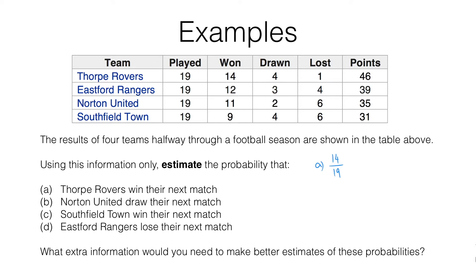In question B, we're asked for an estimate of the probability that Norton United draw their next match. Norton United have drawn two out of their 19 matches, so the best estimate is 2/19. In question C, the probability that Southfield Town win their next match is 9/19, as they've won nine out of 19. In part D, Eastford Rangers have lost four out of their previous 19 matches, so we estimate the probability of losing as 4/19.